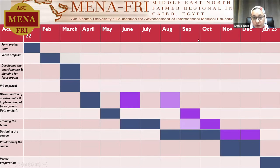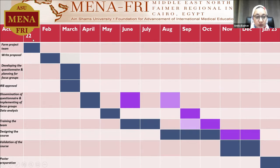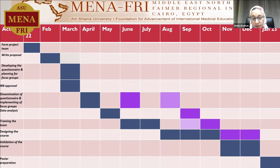The timeline for the project is presented in a Gantt chart. It was planned to start in January 2022 and end by January 2023. What went properly with the timeline was that we started on schedule in January 2022 by selecting team members from the department staff, then a detailed comprehensive proposal was written by myself, the main investigator, along with development of questionnaires for students and staff members and planning for the focus groups — all done on time.